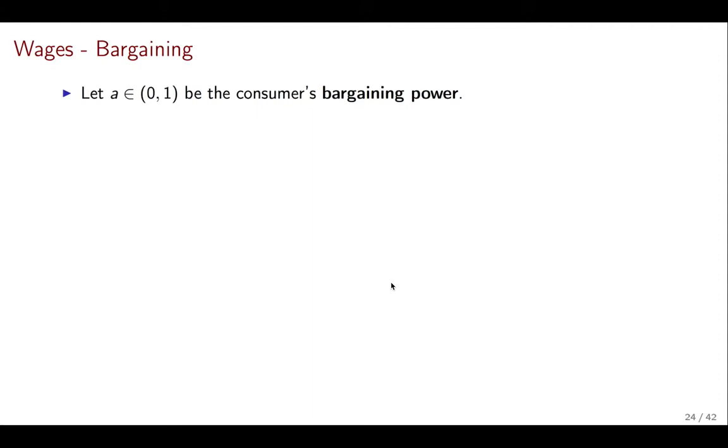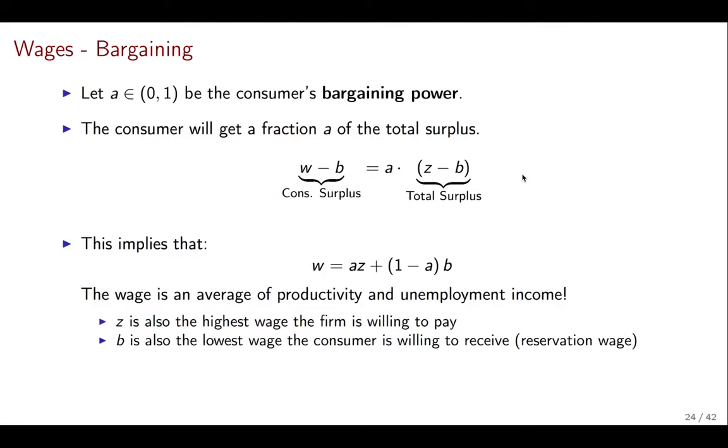So what about the bargaining? Well, we're going to introduce a new parameter that we're going to call A. And A is going to be the consumer's bargaining power. So you might think that the stronger the bargaining power is, the higher the wages are going to be for workers. And that's indeed the case. What we know here is that the consumer will get a fraction A of total surplus. So consumer surplus W minus B is equal to A times Z minus B, the total surplus. You can operate on this and find out that wages are going to be equal to an average of Z and B.